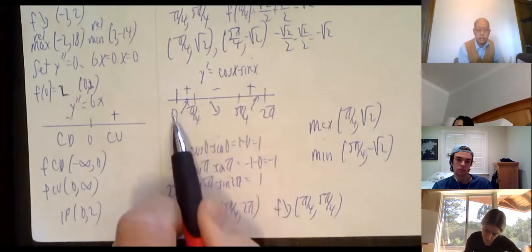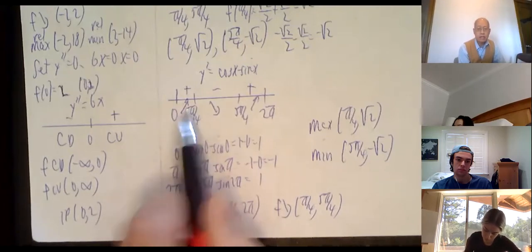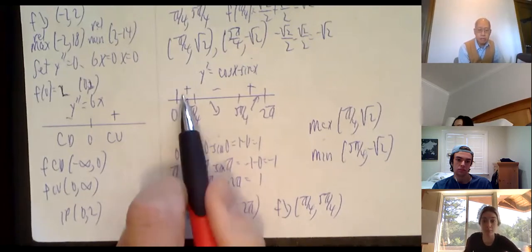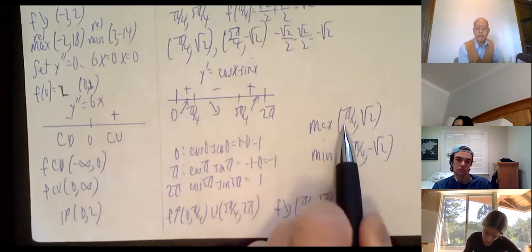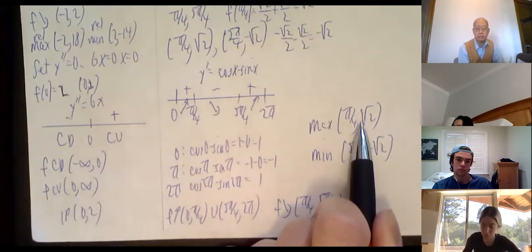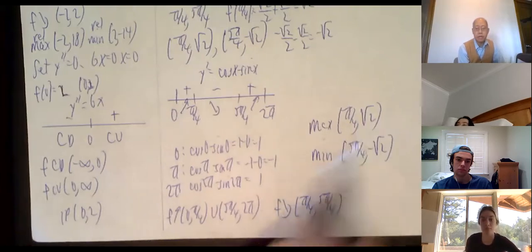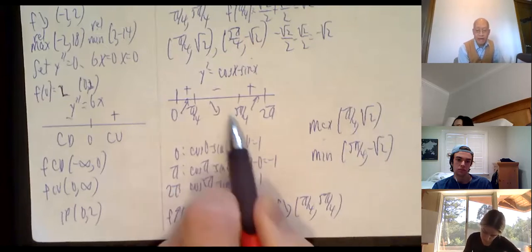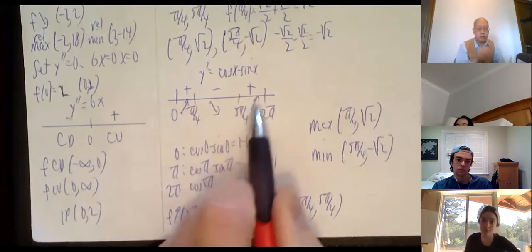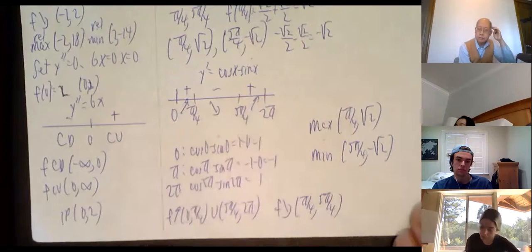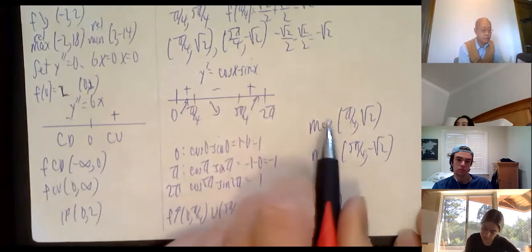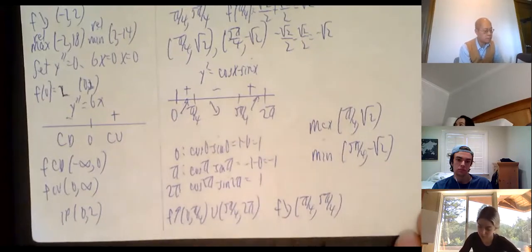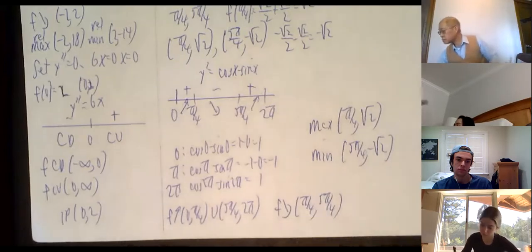Since it increases then decreases, there's a maximum at (π/4, √2). Since it decreases then increases, there's a minimum at (5π/4, -√2).